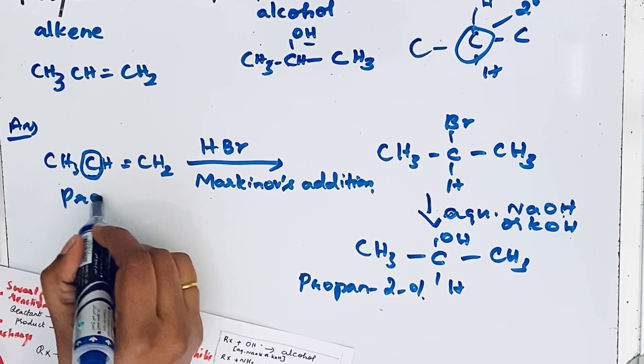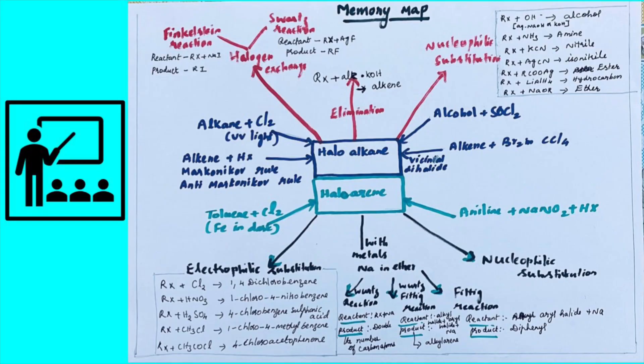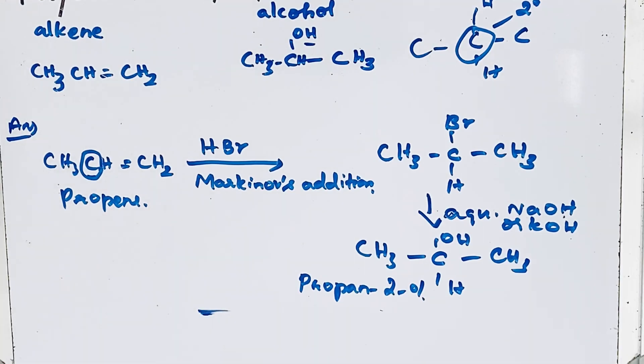This is propan-2-ol. If you have this memory map, you can solve any kind of conversion type questions. Thanks for watching.